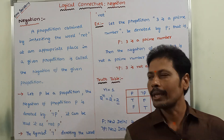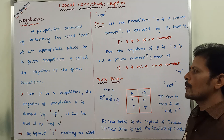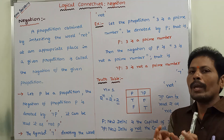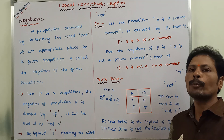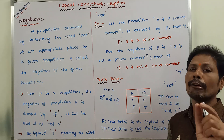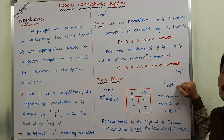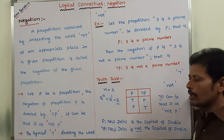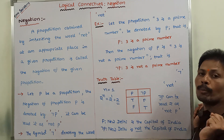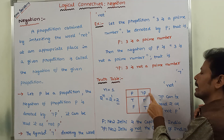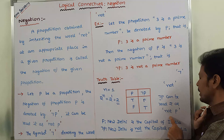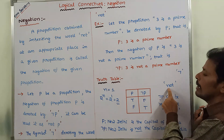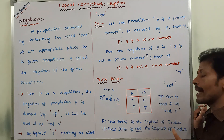In summary, for a given proposition P, the negation can be obtained by inserting the word 'not' at an appropriate place. The negation of P is denoted by ¬P, where the symbol ¬ represents 'not.' So ¬P is read as 'not P.'